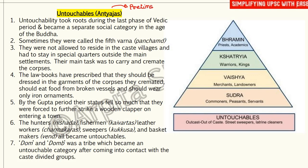Untouchability took roots during the last phase of the Vedic period, and untouchability became a separate social category in the age of Buddha and Mahavira. Sometimes they were known as the fifth varna, or 'Pancham' — this is an important point for prelims. They were not allowed to reside in caste or high-caste villages and had to stay in separate quarters outside the main settlements.